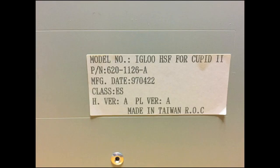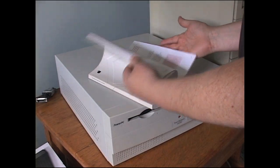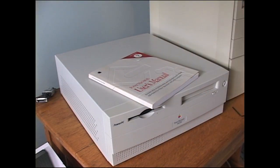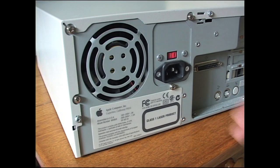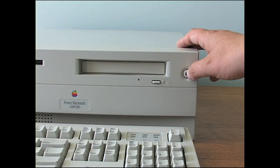On the bottom of the case, instead of a laminated Apple sticker, there's just a paper sticker which reads 'Igloo HSF for Cupid 2.' The 4400 had the Apple internal code name Cupid. The laminated sticker is actually on the back.